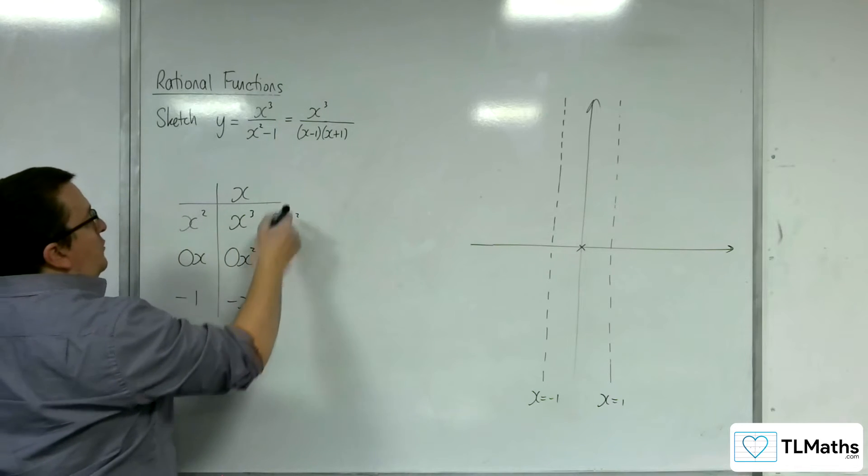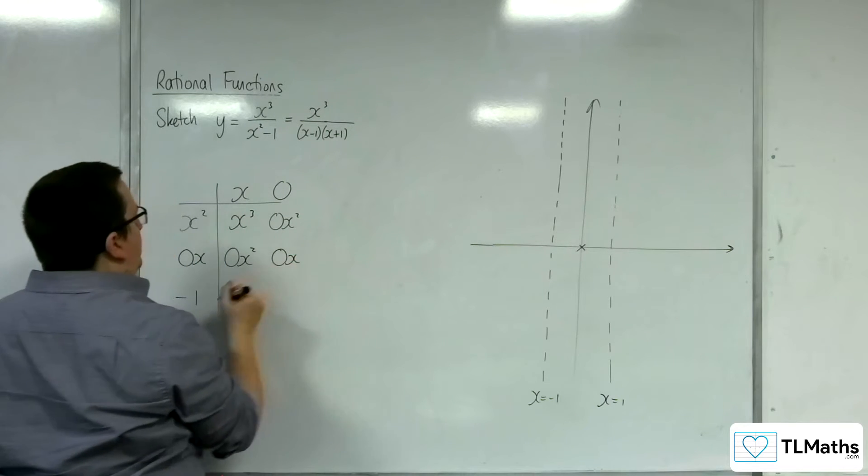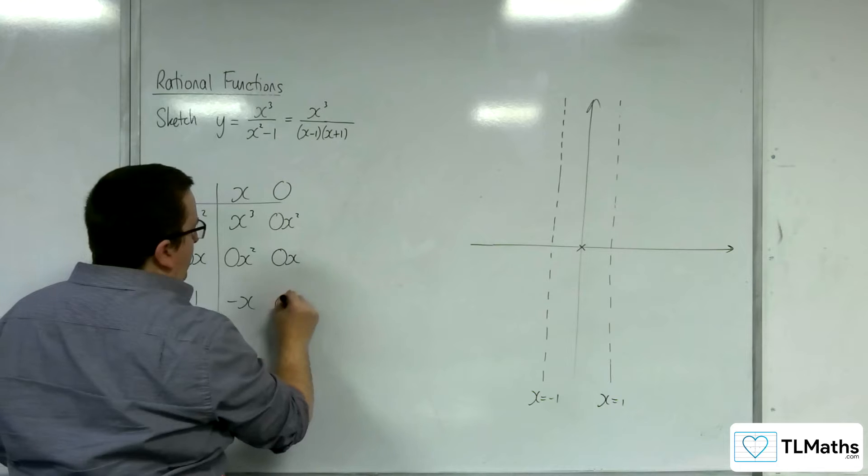Now I don't want any x², so I'm going to have 0x² there. x² into 0x² goes 0 times. Then 0 times 0x is 0x. 0 times -1 is 0.